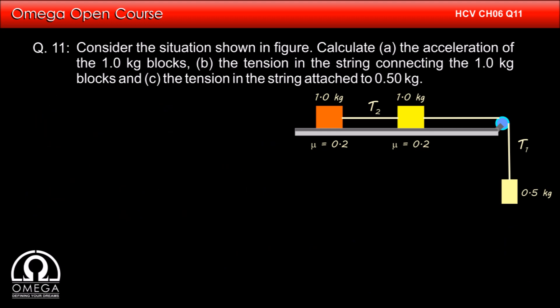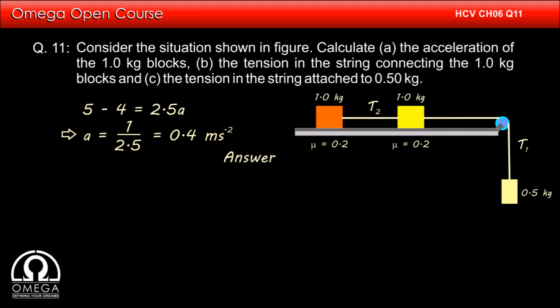Adding equations 1, 2, and 3 we get: 5 minus 4 = 2.5a, which implies a = 1/2.5 = 0.4 m/s². This is the answer to part (a). Putting the value of a into equation 3: T2 minus 2 = 0.4, so T2 = 2.4 N. This is the answer to part (b).